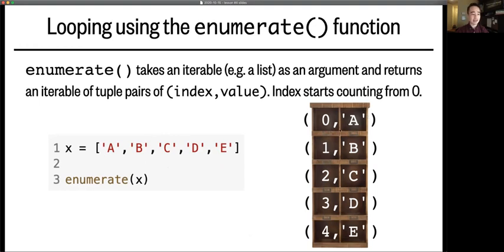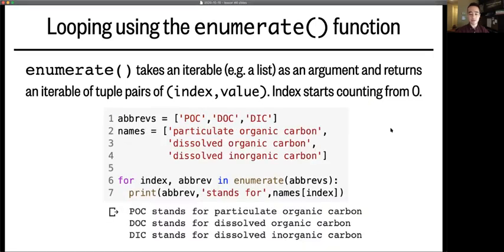for this time each tuple pair is index comma value. So for this list x, the enumerate function will give you an iterable with tuples zero comma a, one comma b, two comma c, and so on.